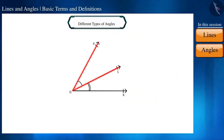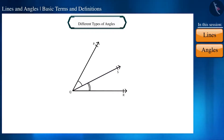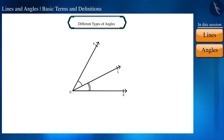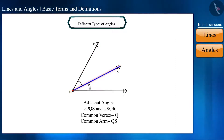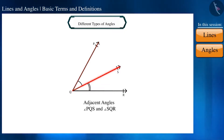If two angles have a common vertex, a common arm, and their non-common arms are on different sides of the common arm, they are called adjacent angles. In the figure, the vertex Q of both angles is the same. For angle PQS and angle SQR, the arm QS is the common arm, and the sides PQ and QR are in opposite directions from QS. That is why angle PQS and angle SQR are adjacent angles.